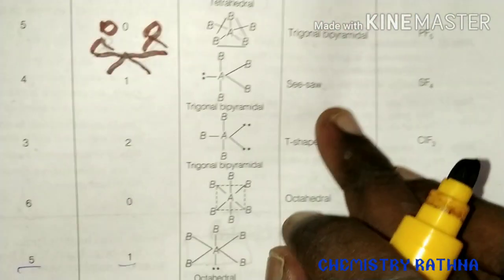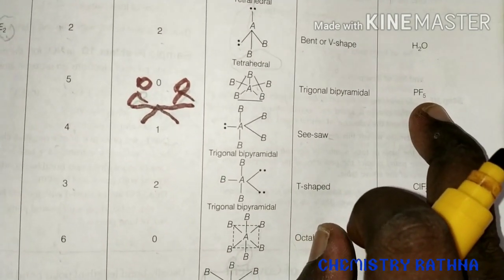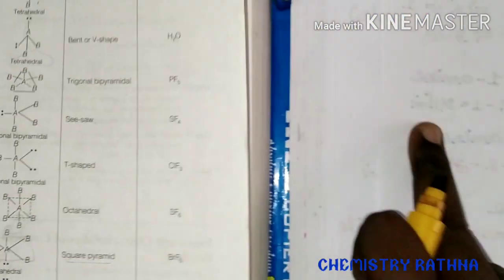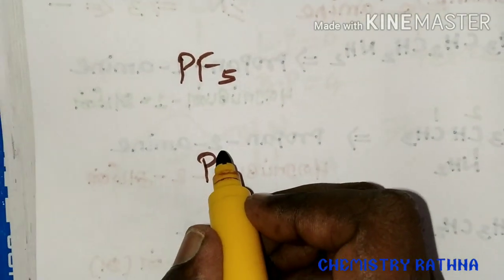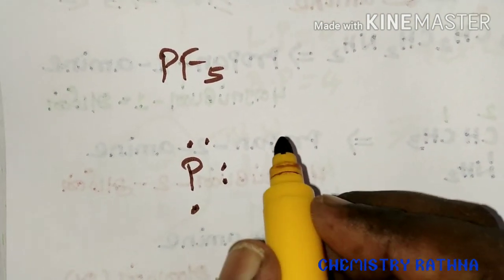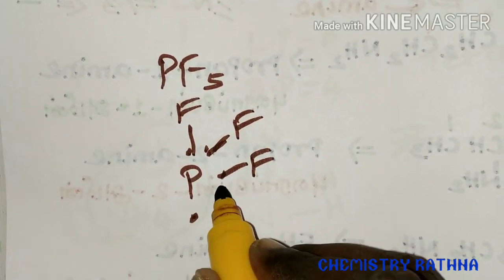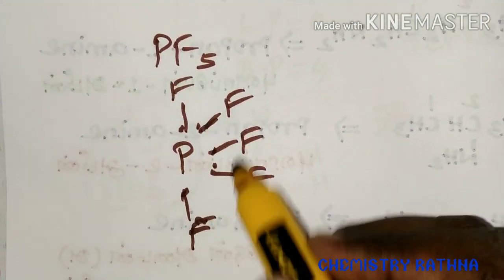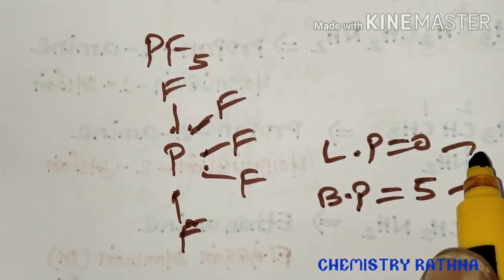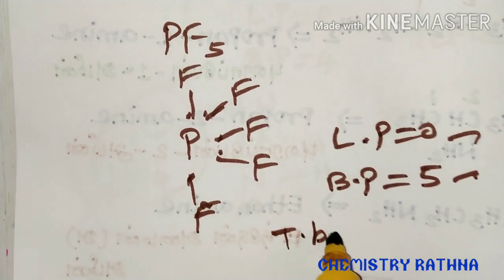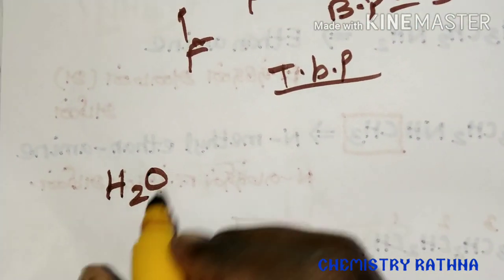How can we find the shape? With 5 bond pairs and 0 lone pairs, it is trigonal bipyramidal. For example, let's check NF5. Nitrogen has 5 valence electrons. It has 5 fluorines. The lone pair is 0, the bond pair is 5. The shape is trigonal bipyramidal.